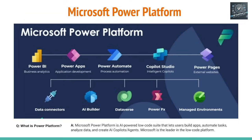Power BI is used to create business reports. Power Apps enables the users to create web applications. Power Automate lets users create flows. Copilot lets users create their own AI co-pilots or AI agents. And Power Pages are web pages that are backed up by data. These five sub-modules or sub-tools support the main modules or tools.